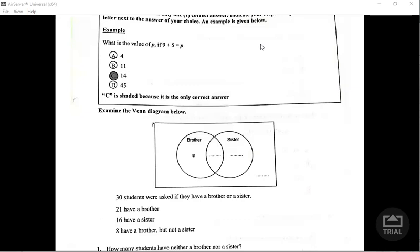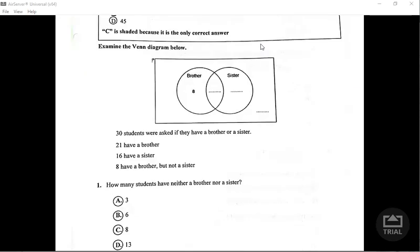Examine the Venn diagram below. Students were asked if they have a brother or a sister. 30 students were asked to be exact, 21 have brothers, 16 have sisters.